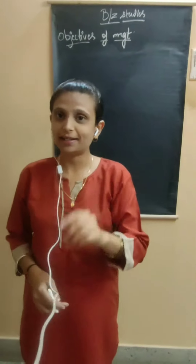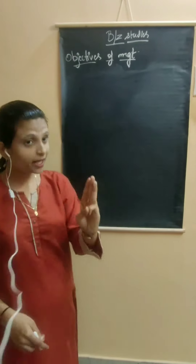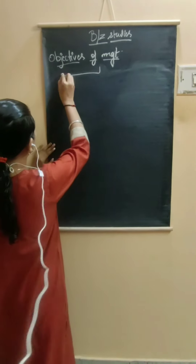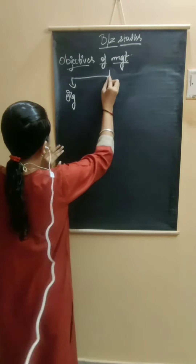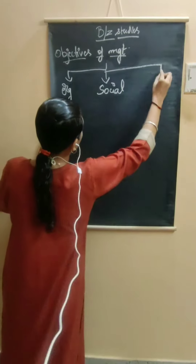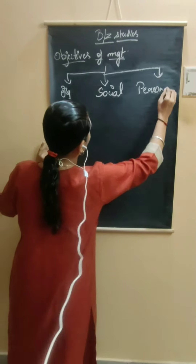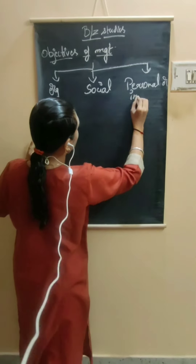Every organization is established in order to achieve the objectives. Different organizations are having different objectives and management has to achieve those objectives efficiently and effectively. The objectives of management are classified into three categories: one is organizational objectives, second one is social objective, and third one is personal or individual objectives.